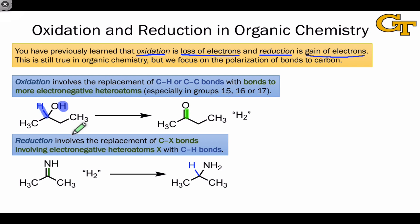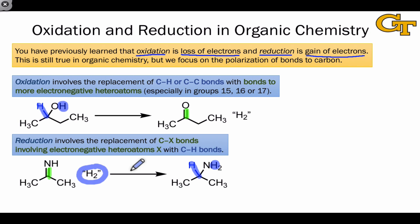Reduction is simply the reverse process — the replacement of a bond between carbon and an electronegative heteroatom, such as nitrogen, with a bond to hydrogen. The bond to the electronegative heteroatom in the starting material can be a single, double, or triple bond. In reduction reactions, the elements of H2 are added to the organic substrate. However, we typically don't accomplish this by adding hydrogen gas directly — instead, a source of H⁻ and H⁺ are added in two separate stages to accomplish this process.